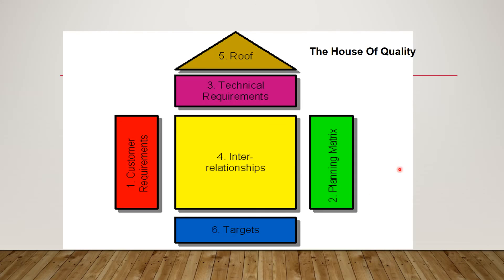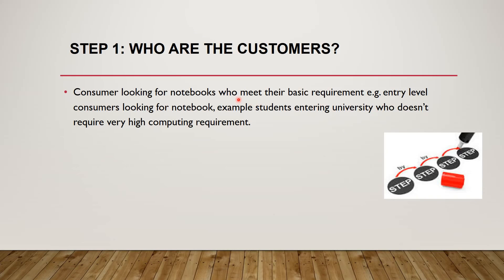The diagram shows the general shape of the house of quality we are going to construct. We need to determine the parameters inside the house of quality before constructing it. For step 1, we need to identify the customers we are going to target. Our consumer targets are students entering university who do not need high computing requirements.